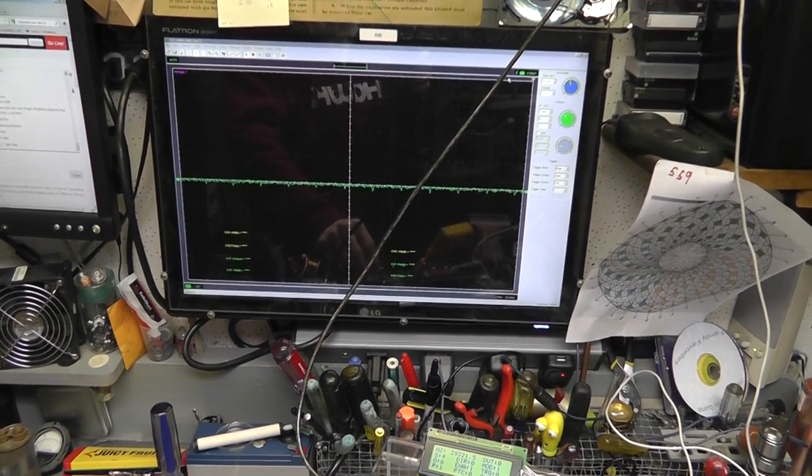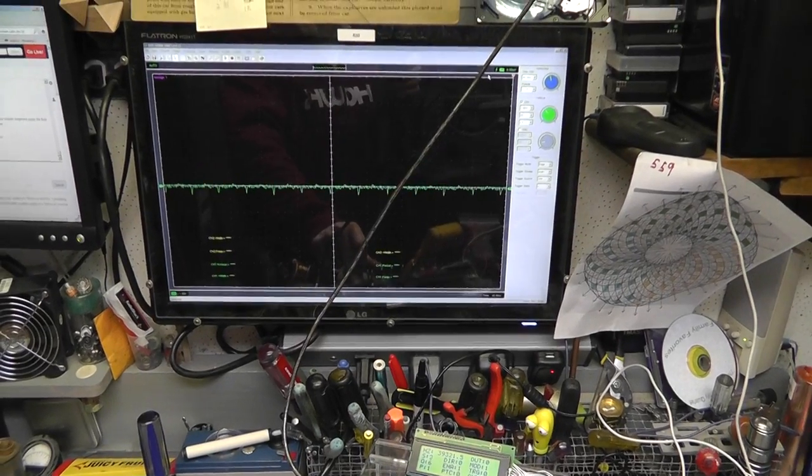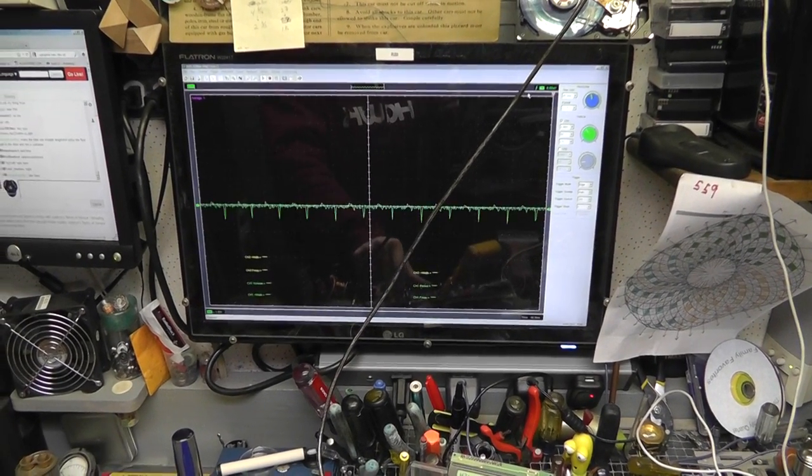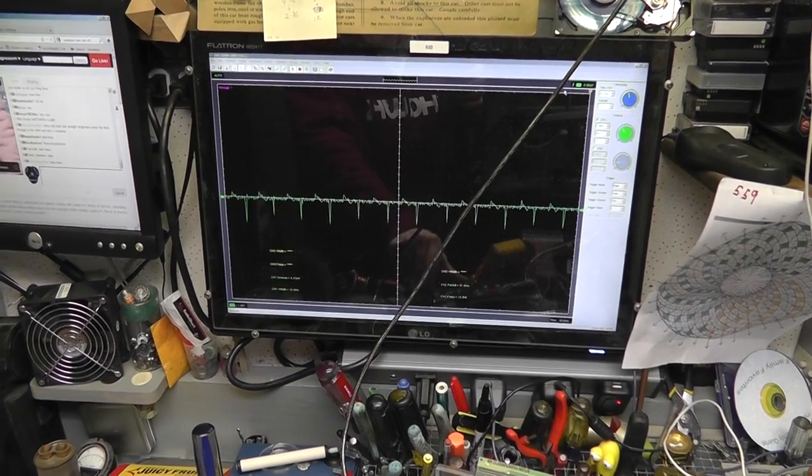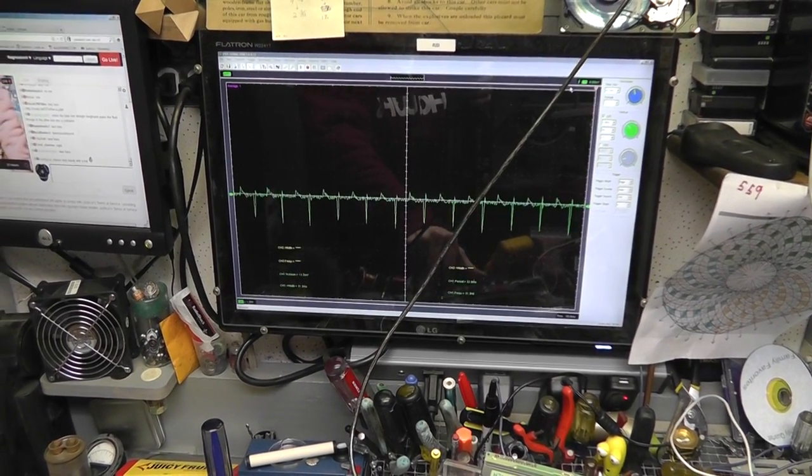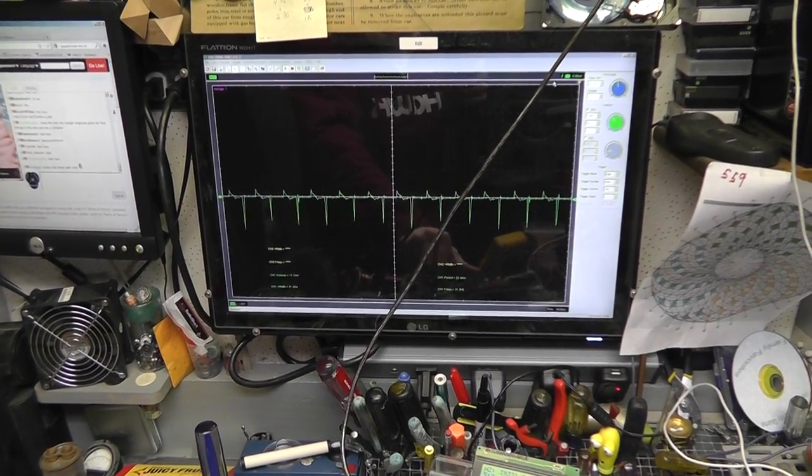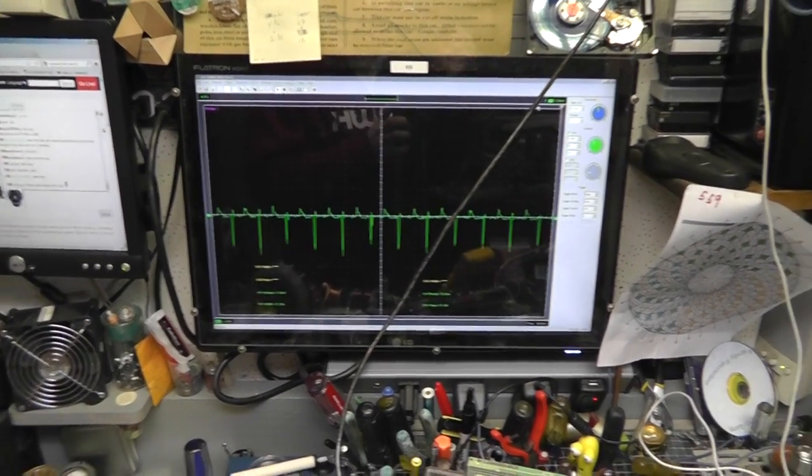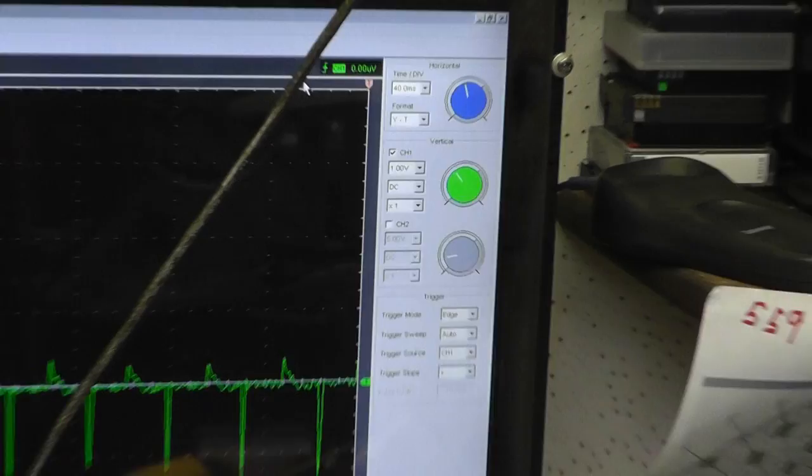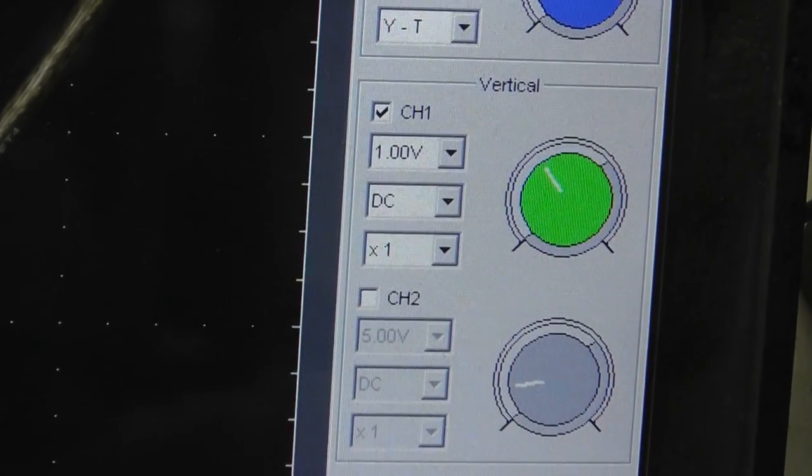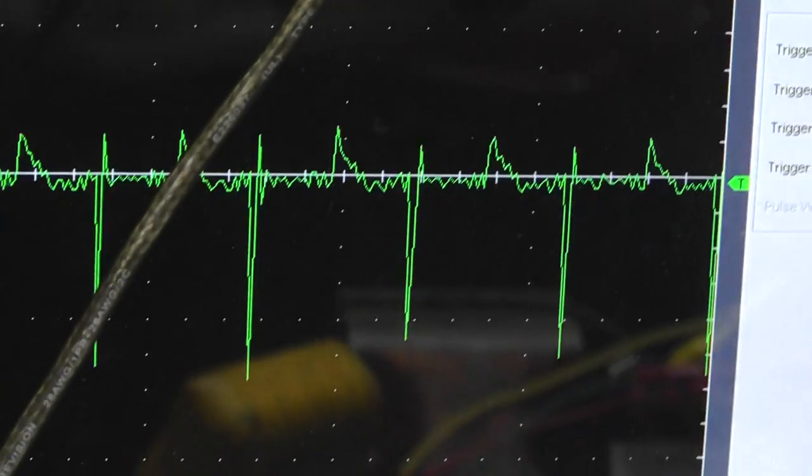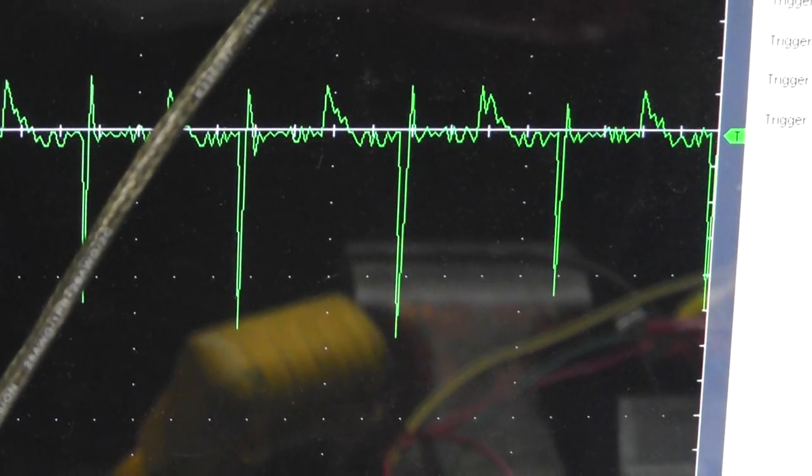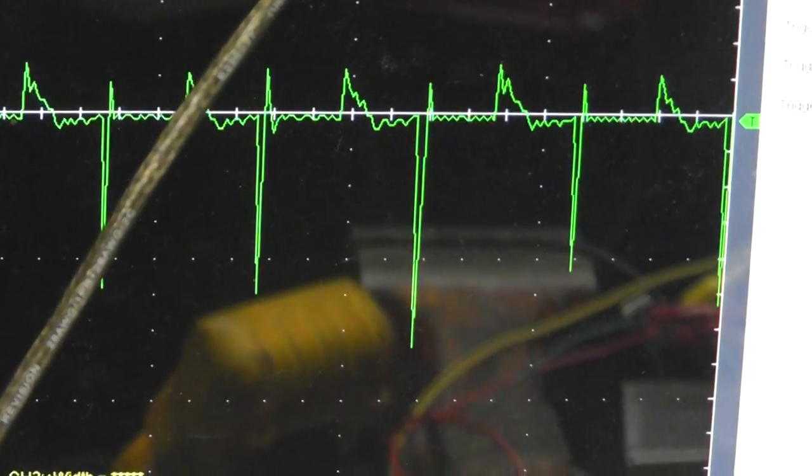I'm going to turn one of these on at a time and show you what the scope shot looks like. The first one, second one, third one, fourth one, fifth one, sixth one. Now my scope is set at one volt per division, and so that looks like one and a half volts here and there.